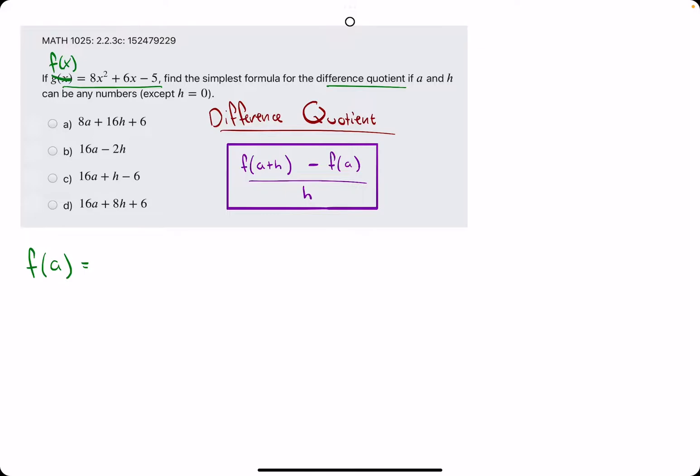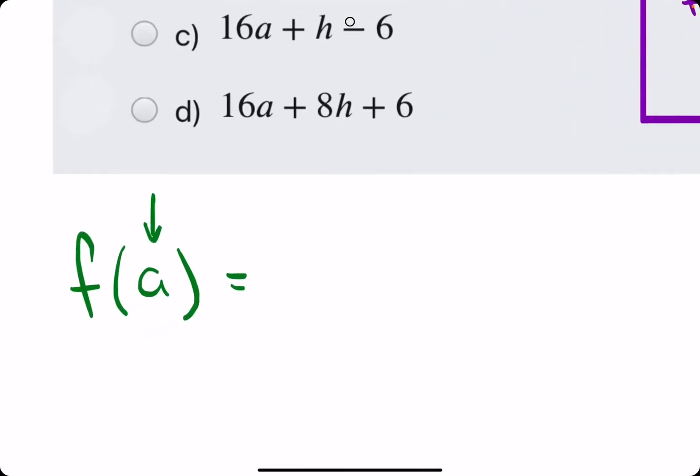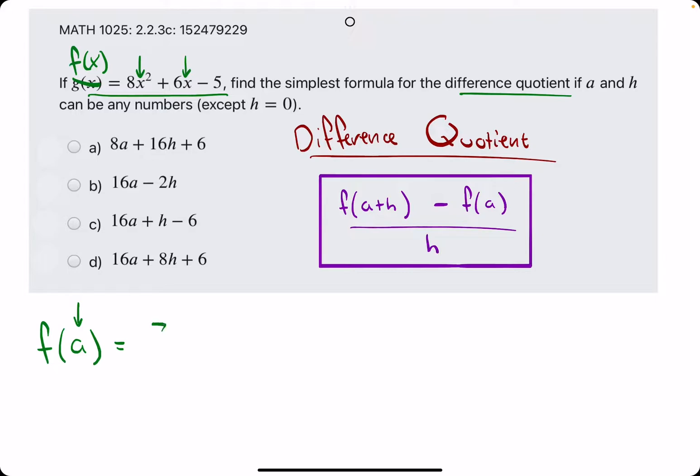And so, how do we find f of a if we don't know what a is equal to? It's essentially just doing the same process. We are going to take whatever's inside the parentheses, in this case a, and plug it in for x. So, f of a is just 8a² plus 6a minus 5.